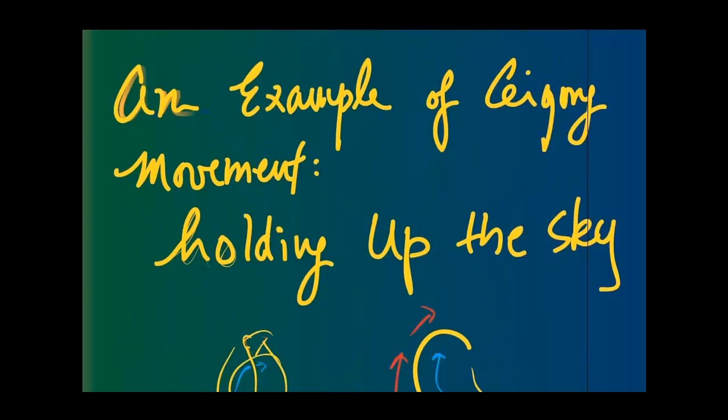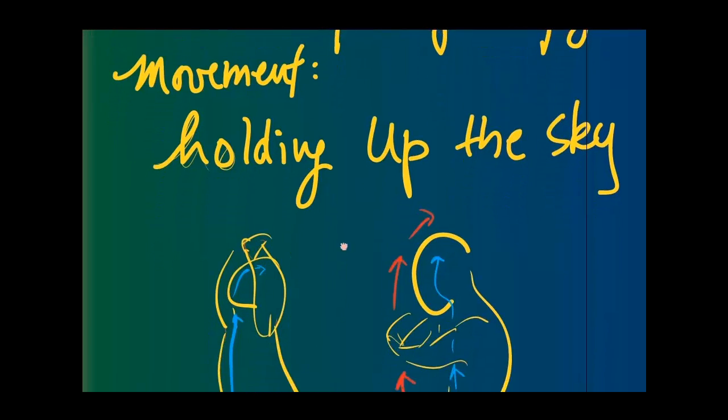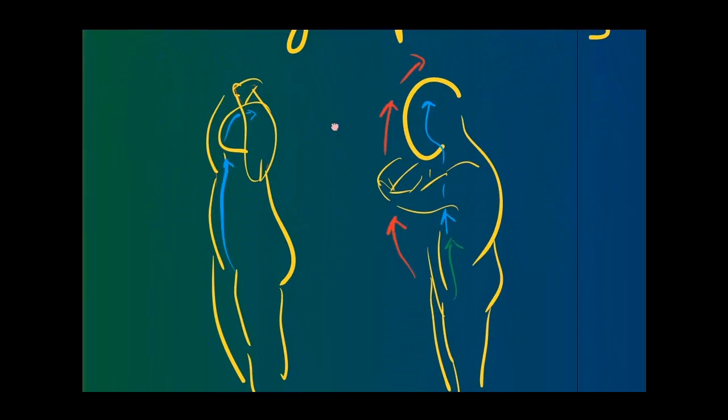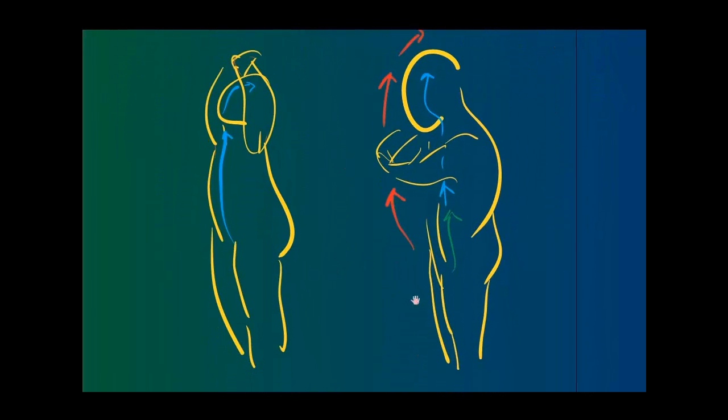One example of a Qi Gong movement called Holding Up the Sky involves the practitioner slowly raising the arm up and over the head. It is a very nice spinal stretch. But the main point is not only stretching the skeletal muscular system.